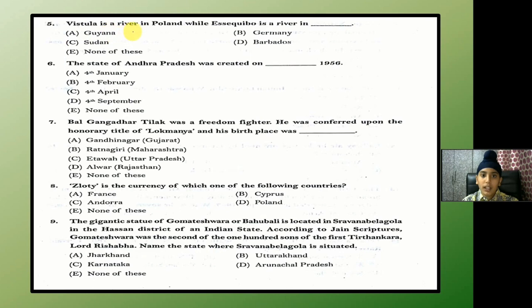Vistula is a river in Poland while Essequibo is a river in Guyana. The answer is A — Guyana.